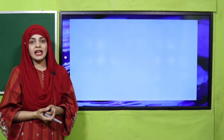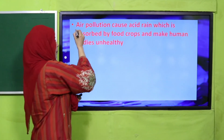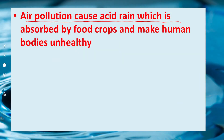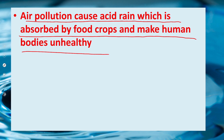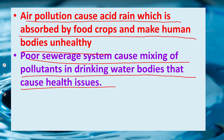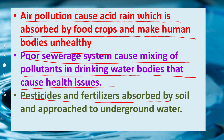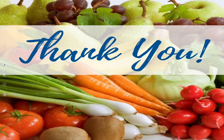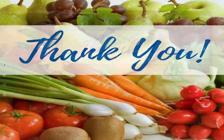My dear students, in today's lecture we have learned that air pollution causes acid rain, which is absorbed by food crops and makes human bodies unhealthy. Poor sewerage system causes mixing of pollutants into drinking water, causing health issues. Pesticides and fertilizers absorbed by soil approach underground water, also causing water pollution. I hope you will always prefer to drink clean water to keep yourself healthy. Keep everybody around you safe. Have a good day. Thank you so much. Allah Hafiz.